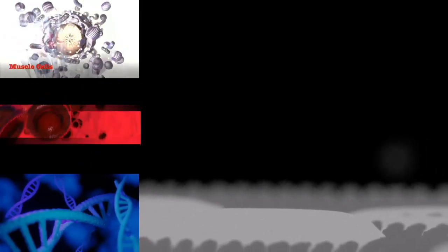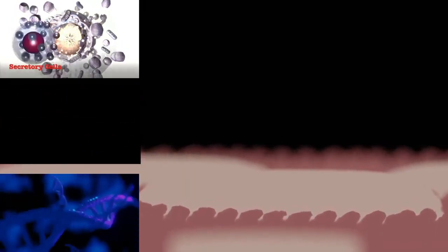Most prokaryotes are between 1 micrometer and 10 micrometers, but they can vary in size from 0.2 micrometers, Mycoplasma genitalium, to 750 micrometers, Thiomargarita namibiensis.